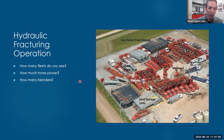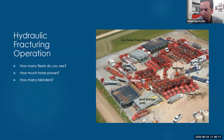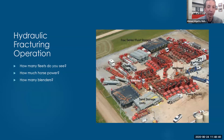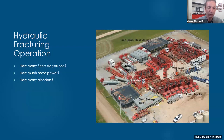If I ask you how many fleets do you see in this picture - this question is kind of confusing because you see one row of pumps here, a second row here, one row of pumps here, and one row of pumps here. If it is one well, most likely it is one frack fleet. If it is two neighbor wells, it may be one frack fleet, or maybe two frack fleets if I want to frack them at exactly the same time. If you ask how much horsepower - the average for each pump is like 2,000 horsepower. So you can count them and multiply by 2,000 to get an average for how many horsepower are at this location.